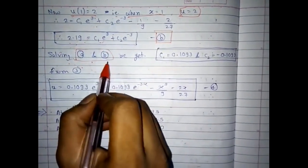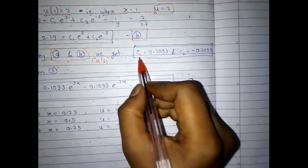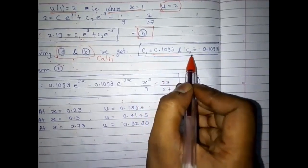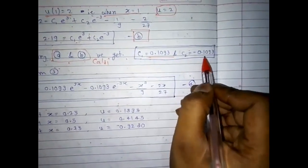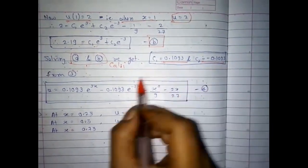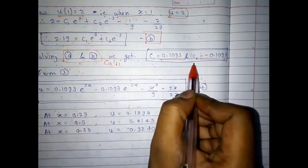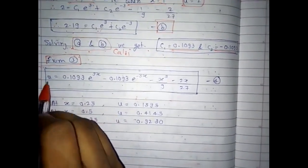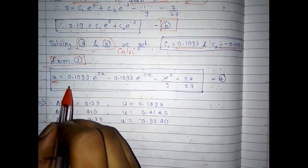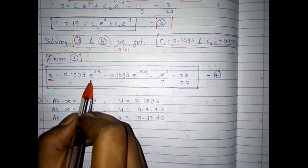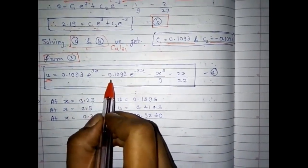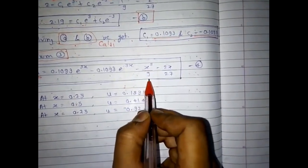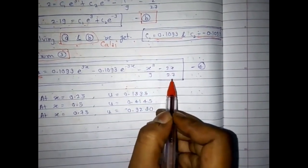Solving equations A and B simultaneously, we get c₁ = 0.1093 and c₂ = -0.1093. Substituting c₁ and c₂ into the general solution gives equation (4): u = 0.1093e^(3x) - 0.1093e^(-3x) - x³/9 - 2x/27.